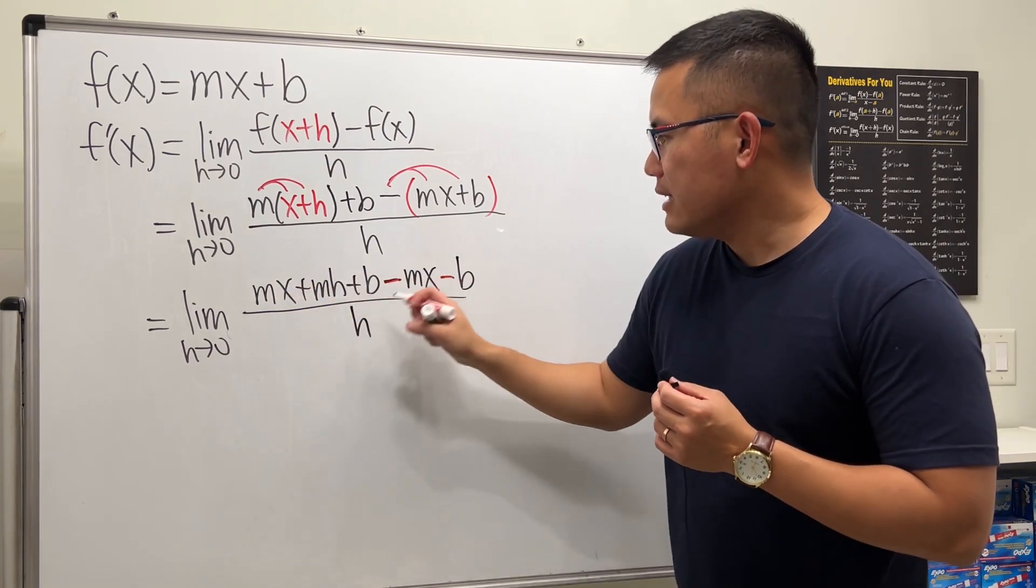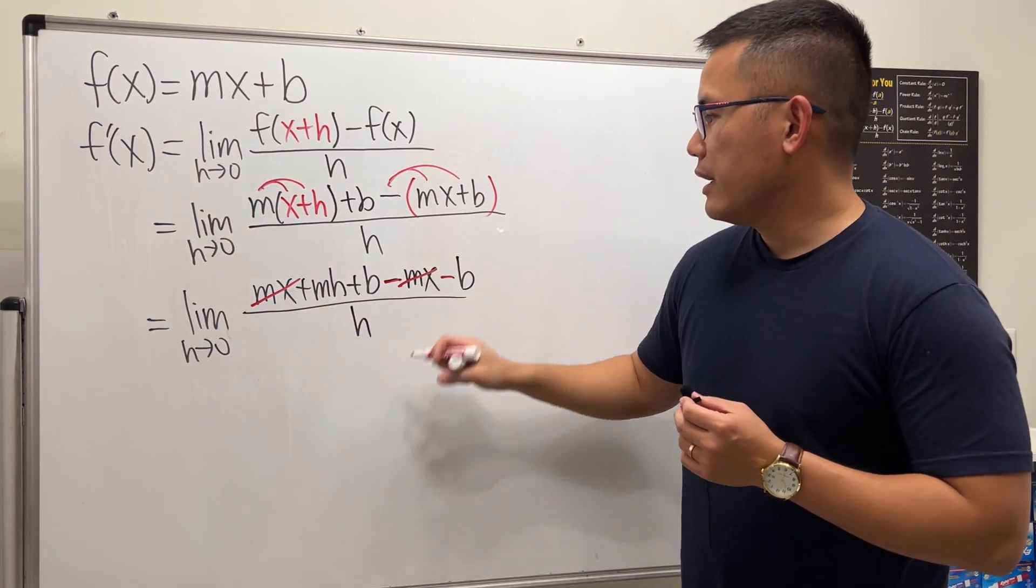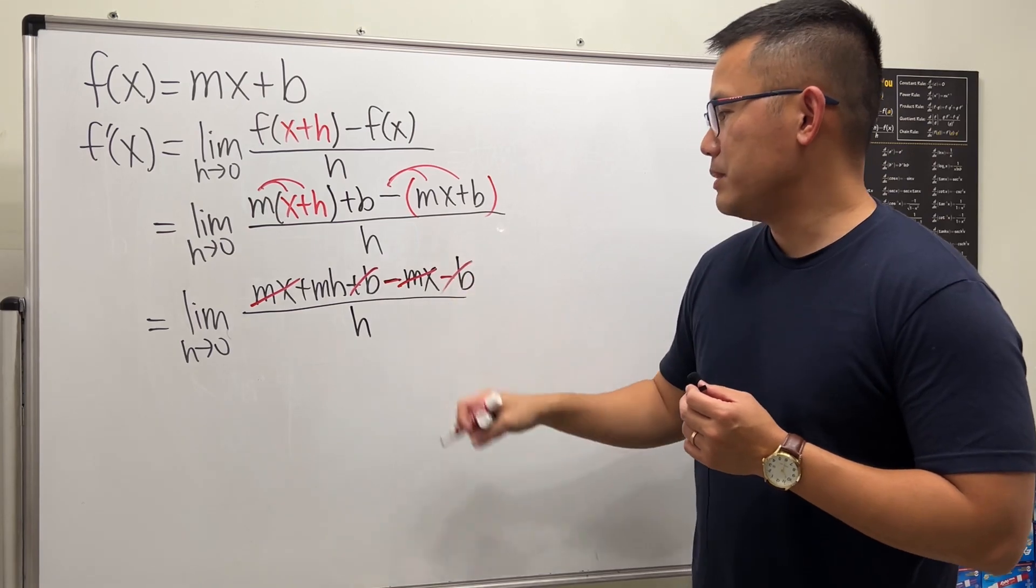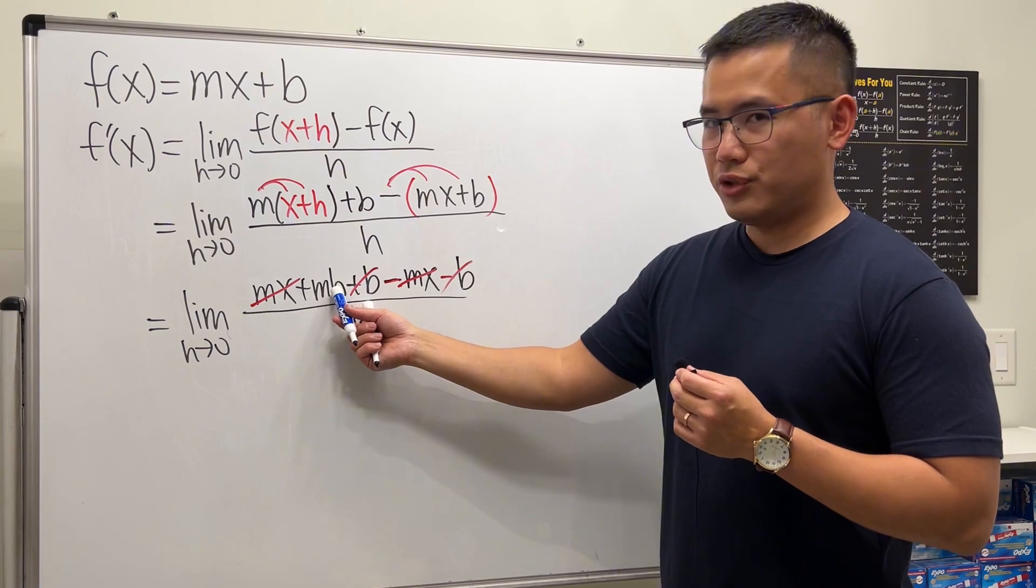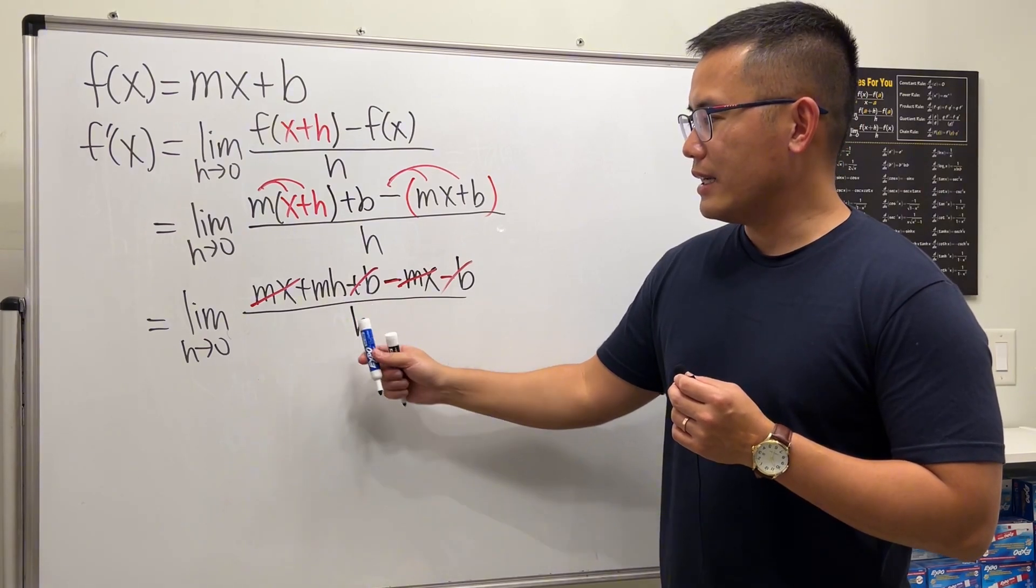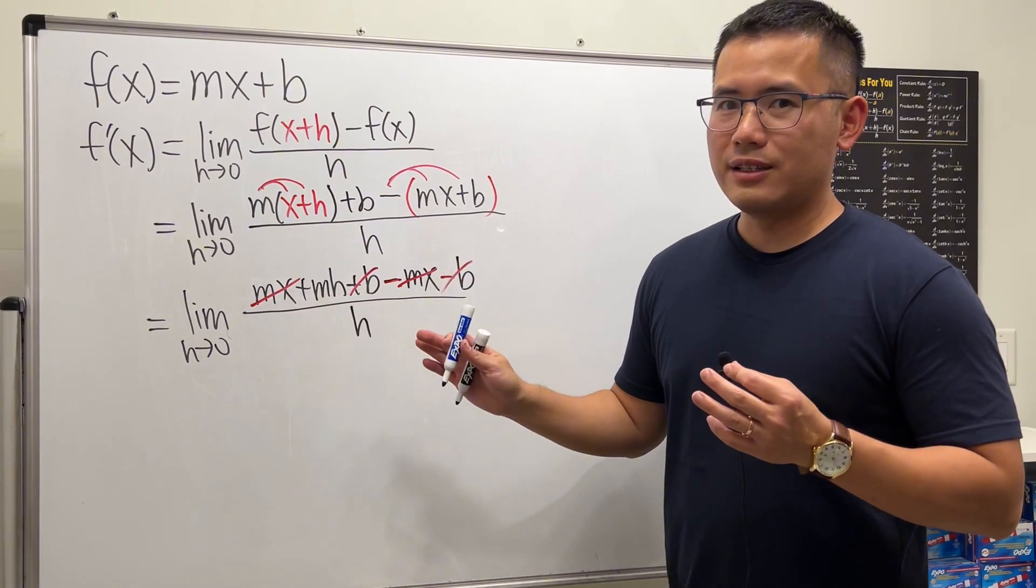Now, mx minus mx, they are just 0. And then b minus b, again, they are just 0. And now, what do we have? This is mh over h. All the other terms, they all got cancelled here already.